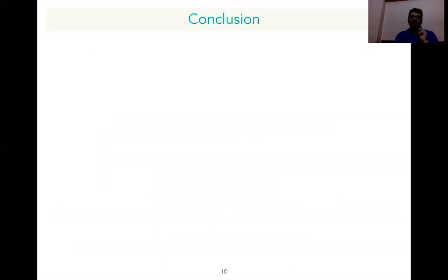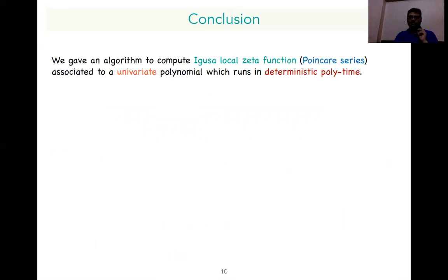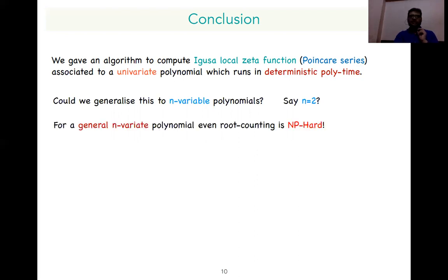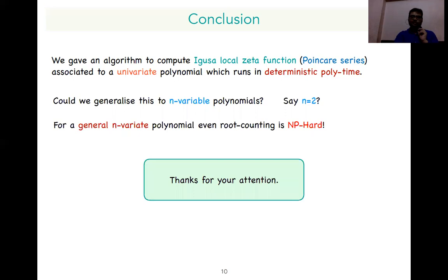In conclusion, we gave a deterministic polynomial time algorithm for computing Igusa's zeta function associated to univariate polynomials. But what about the general multivariate case, or even the bivariate case? We know that general multivariate root counting is NP-hard, so it is not possible to get an efficient algorithm for general multivariate polynomials. Thanks for your attention.